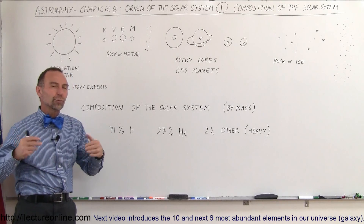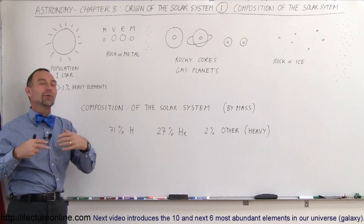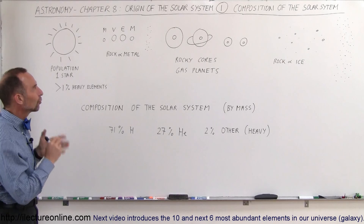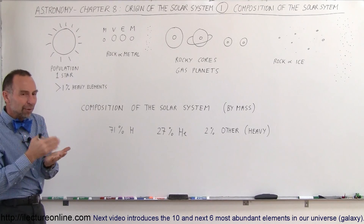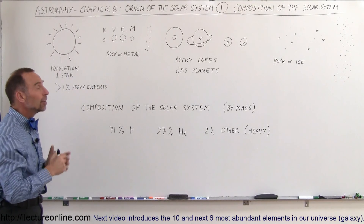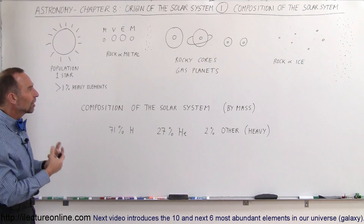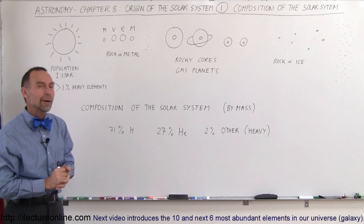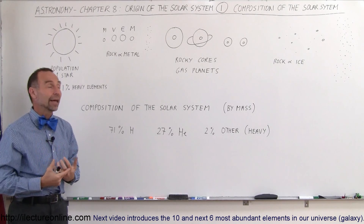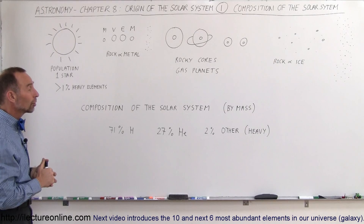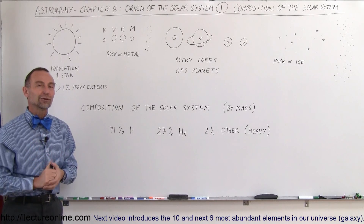Whatever model of the origin of the solar system we come up with must fit what we end up with today. Whatever model we come up with must be able to explain all the various things that we find in our solar system, which may be different from what we find in other places. So can we come up with a good theory, a good concept of how our solar system came about? That's what this chapter is all about — to try and explore how the solar system came about and explain why the solar system looks the way it does today. If you're interested, stay tuned — we'll have some more videos on this topic.